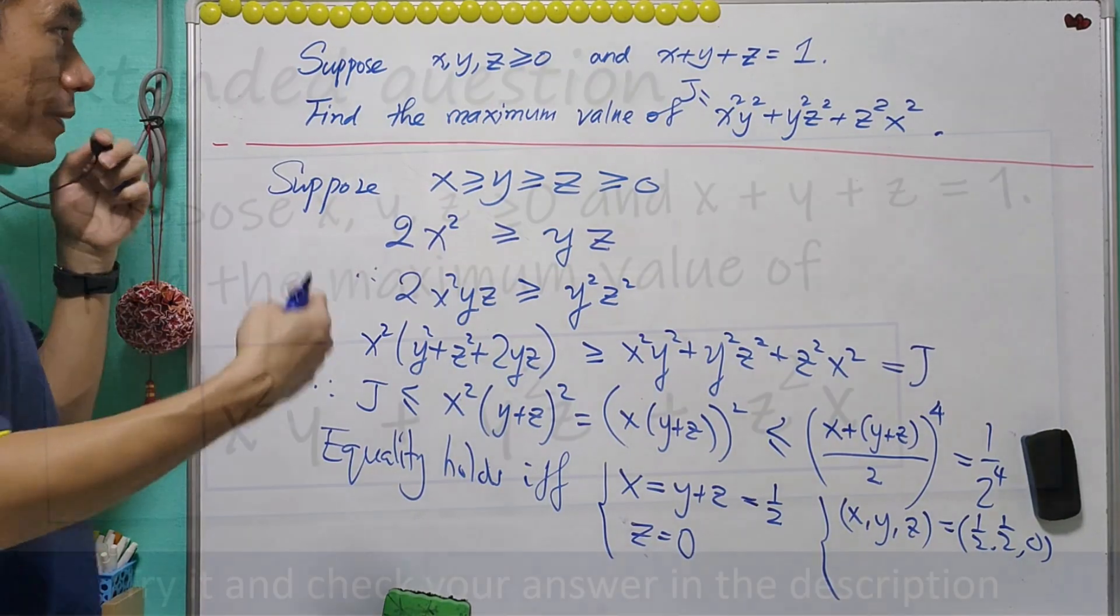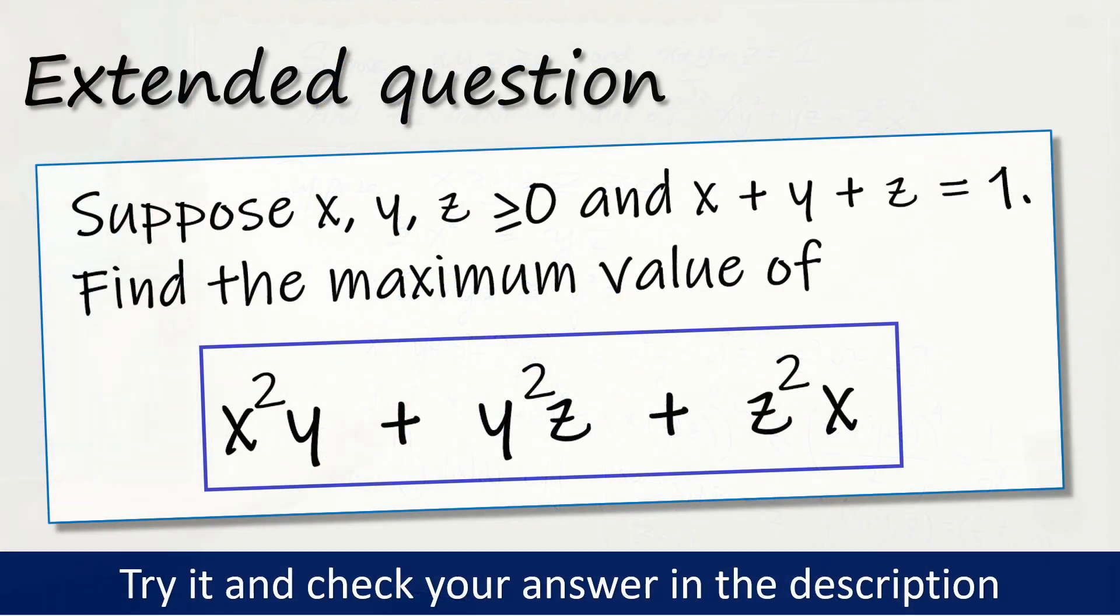As usual, I prepared one similar question for you to try. And, with no surprise, the maximum, again, does not occur when x equals y equals z. You may want to try on your own, and check the answer in the description.